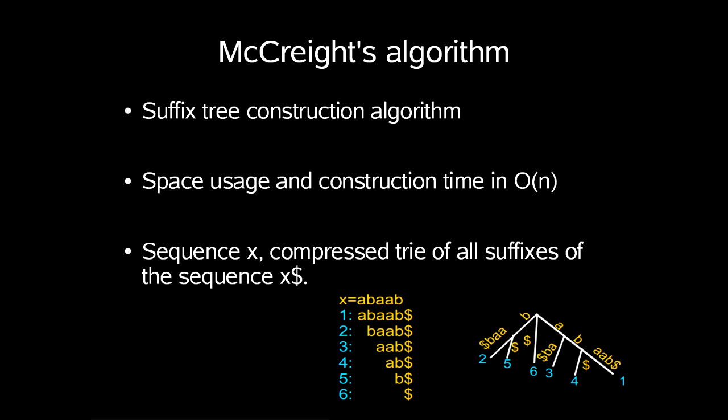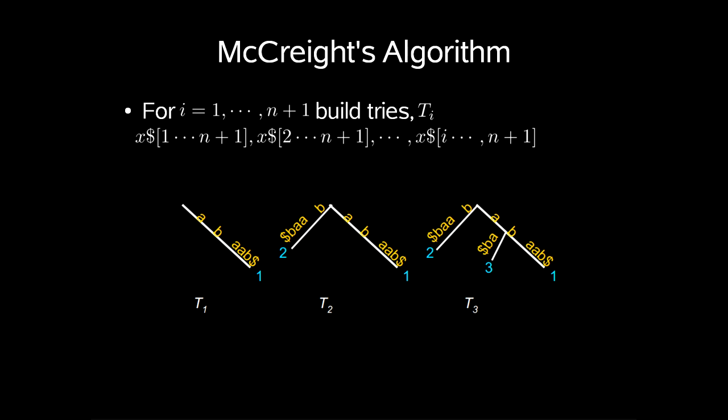Just to recap, a suffix tree of a sequence x is a compressed trie of all suffixes of that sequence x followed by our special nth character, which in our case is the dollar sign. To build this, we do the following described in McCreight's algorithm.